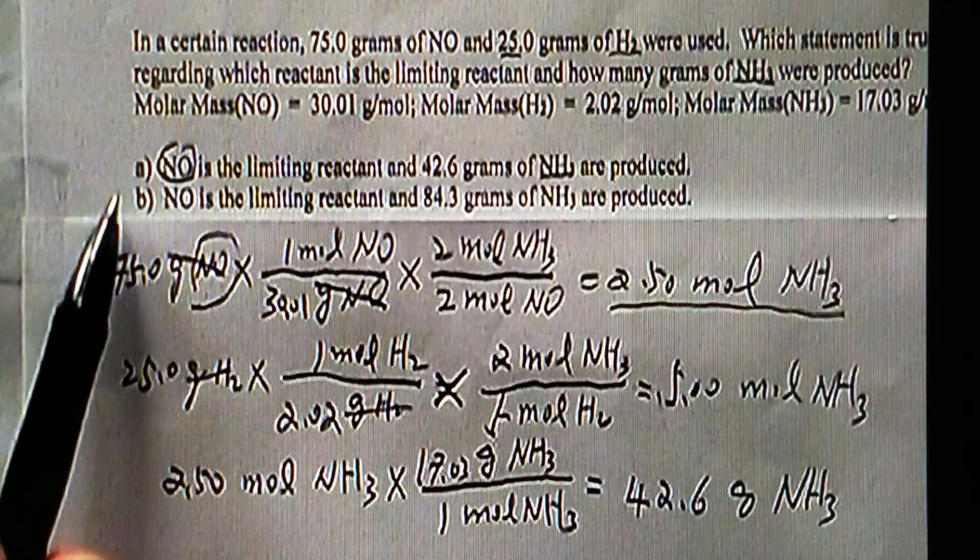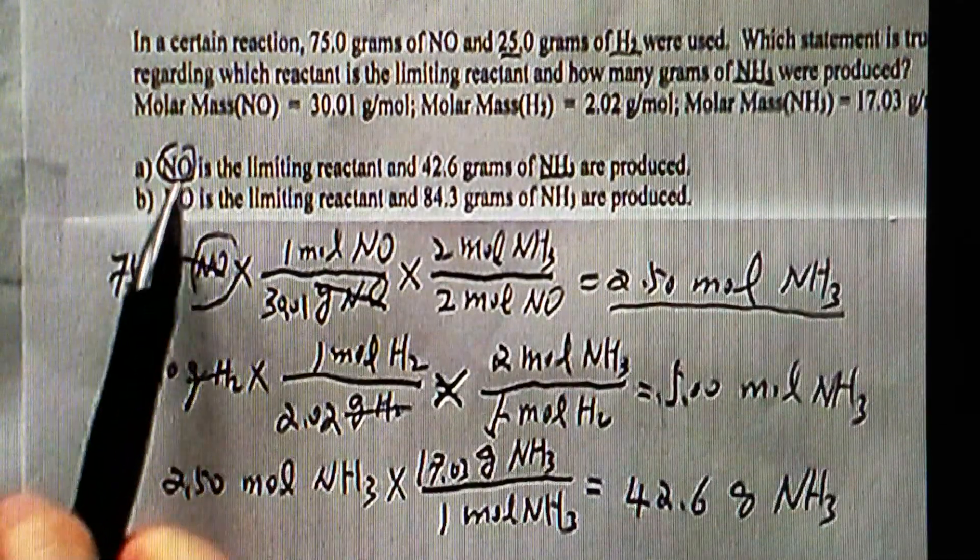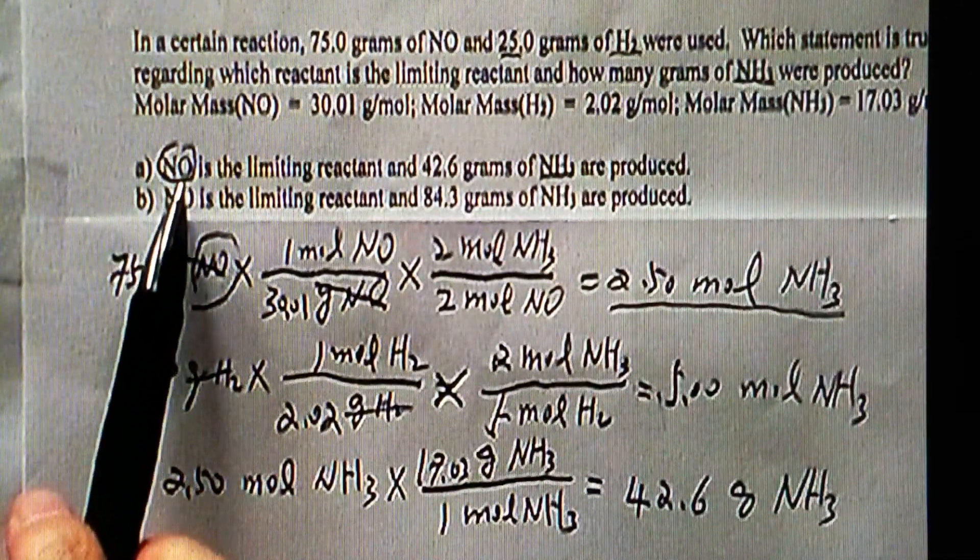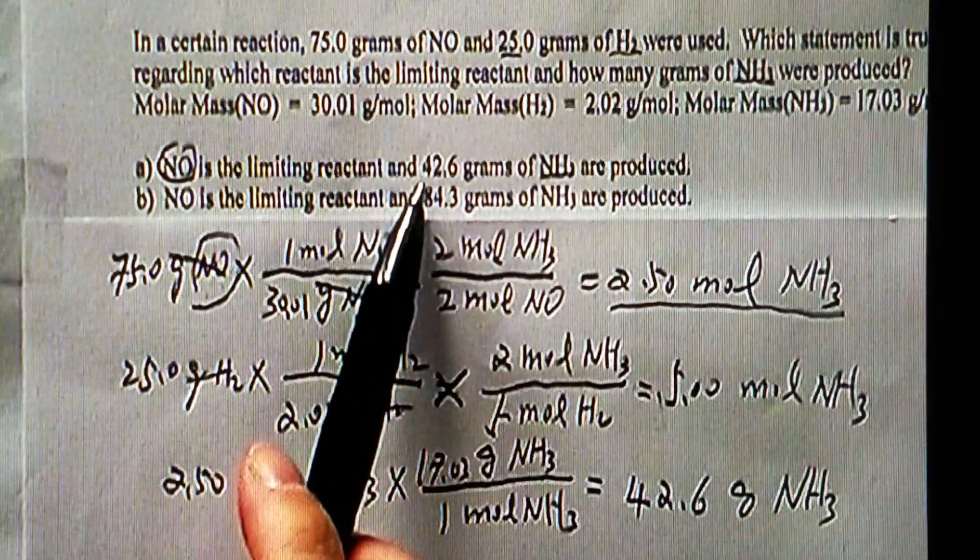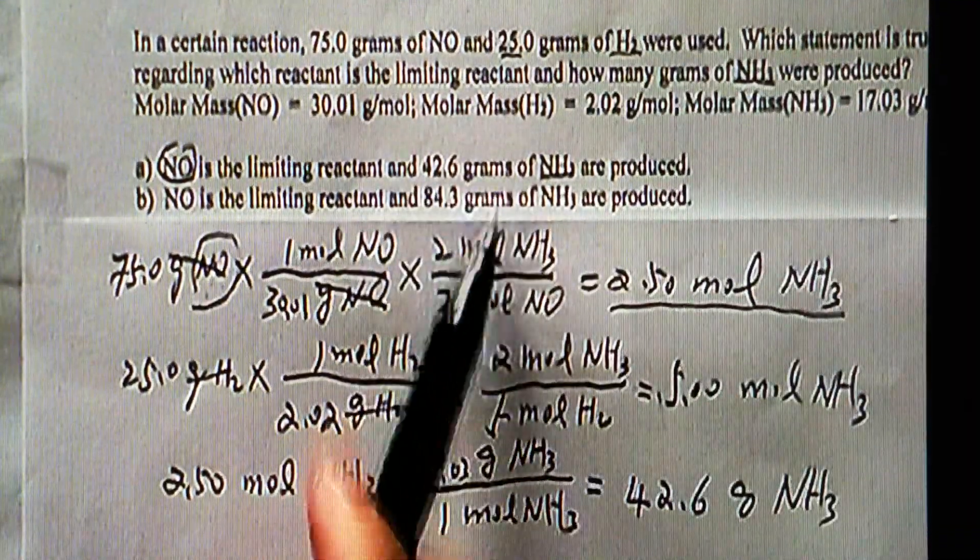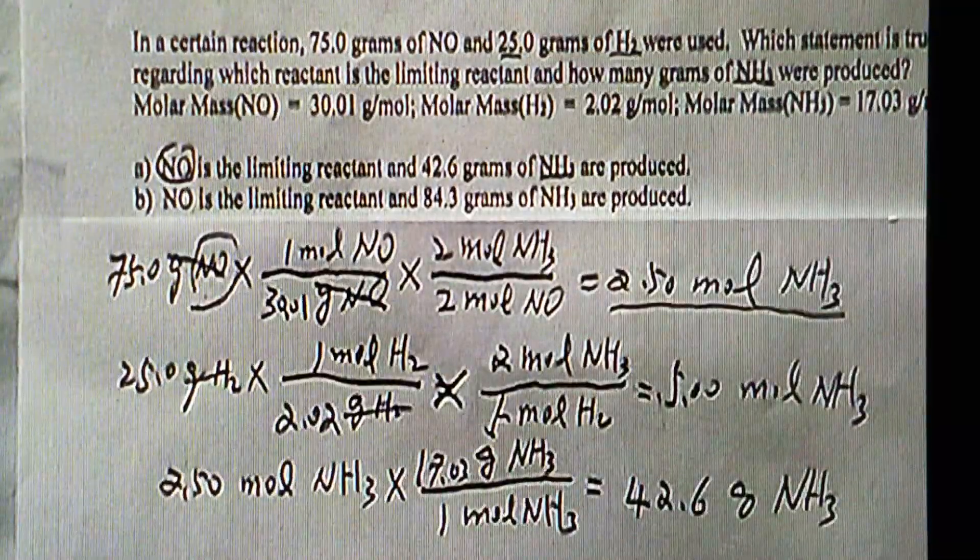If you look at the five choices here, obviously A is the correct answer. Nitrogen monoxide is the limiting reactant and 42.6 grams of ammonia are produced.